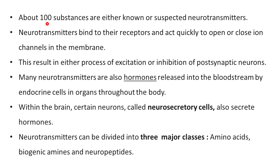About 100 different substances are either known or suspected neurotransmitters. Neurotransmitters bind to their receptors and act quickly to open or close ion channels in the plasma membrane of the neuron. This process results in either excitation or inhibition of the post-synaptic neuron. Because of the opening or closing of the ion channel, the post-synaptic neuron is either activated or inhibited. On this basis, neurotransmitters may be categorized as excitatory or inhibitory in nature.